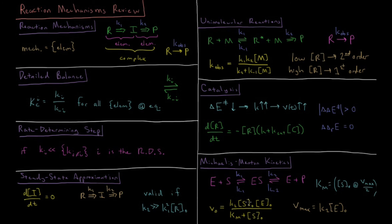The maximum speed of the reaction is defined where the substrate concentration is very very large and the rate law reduces effectively to just Vmax equals K2 times the initial concentration of enzyme. Thank you so much for watching.